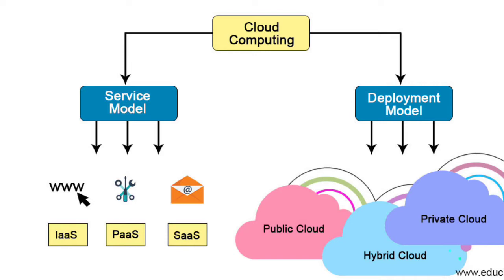The deployment model has three types: the first is public, the second is private, and the third is hybrid. The service model includes infrastructure as a service, platform as a service, and software as a service.